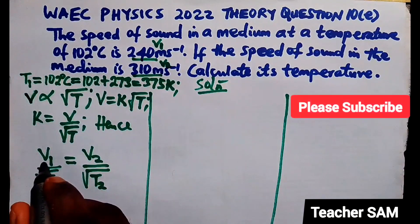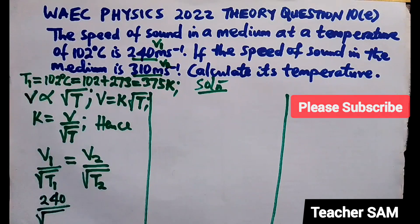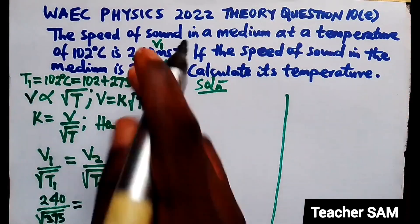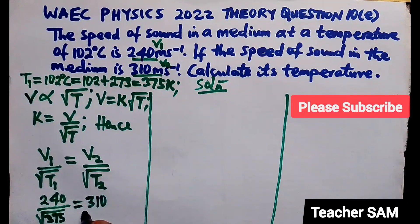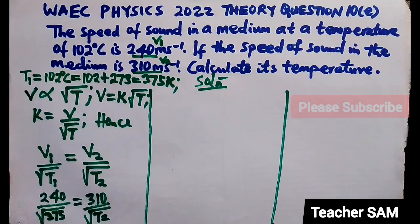So, I'm just going to substitute what we have there. Our V1 is 240. Our temperature 1, remember, we did that and we have 375. 375 equals to the same thing. Our V2 is given to us as 310 divided by our T2. We don't know that. So, let's write just T2 there. So, we have this.